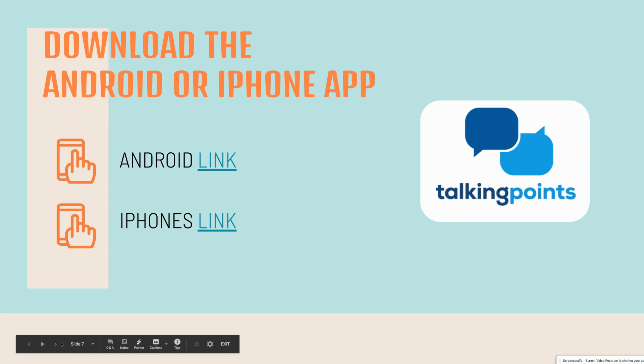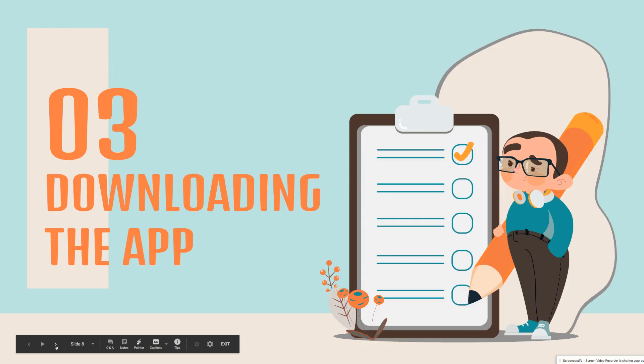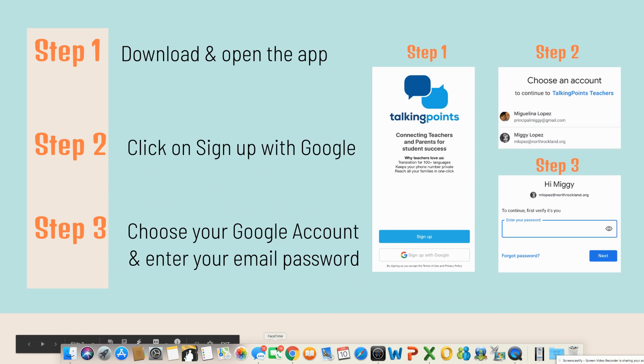So let's go through how to download the app. I have linked here the link to receive the app for Androids as well as for iPhones. I'm also going to put it down in the description so that you can get the link from there as well. The first thing you're going to do is download and open the app. I am actually using an iPhone, so for me it looks like this. I would imagine that for Android it looks somewhat similar. When you download it, you'll see it'll say Talking Points — connecting teachers and parents for student success.